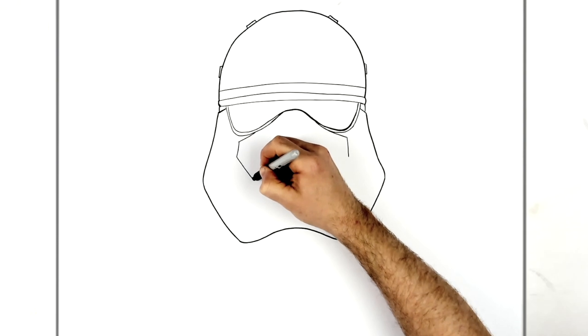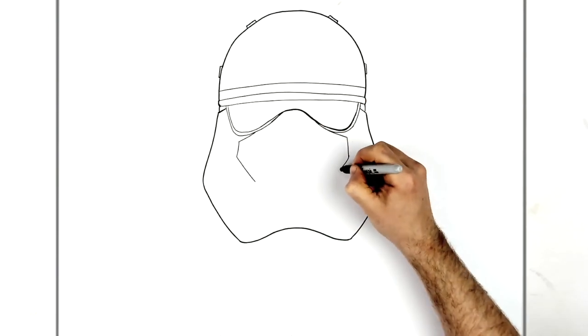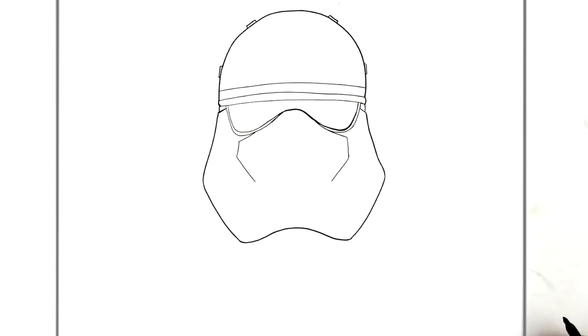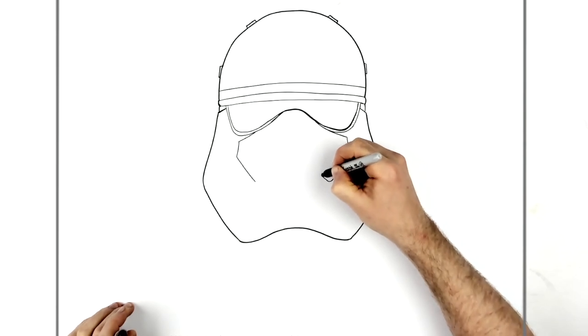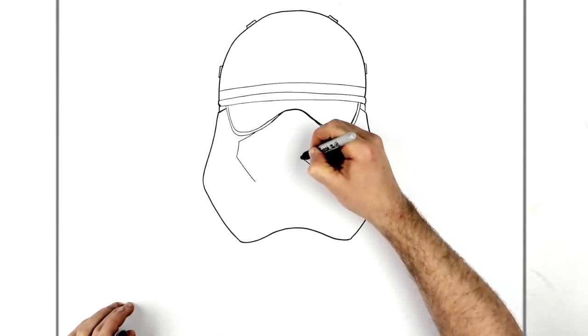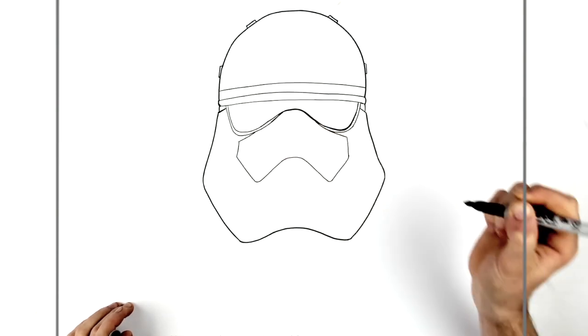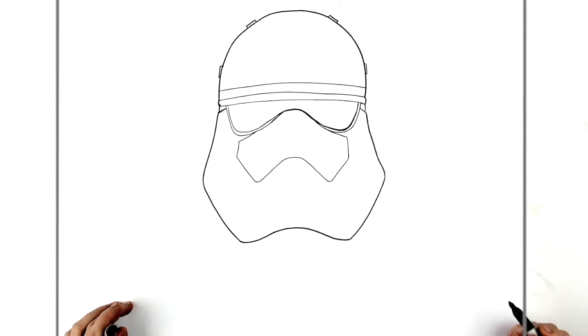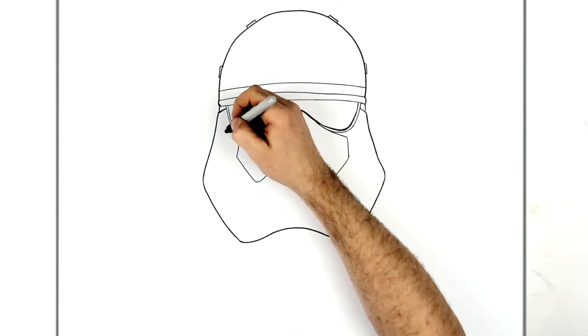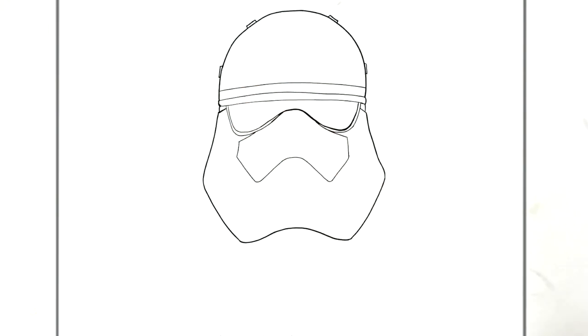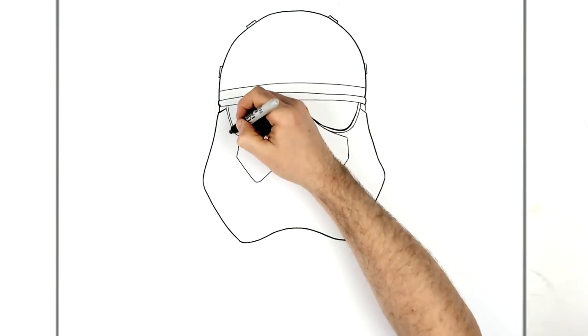And then bring it in, into there. Now if I go too fast, just use that pause button. And then this curves over his mouth and down, down to there.